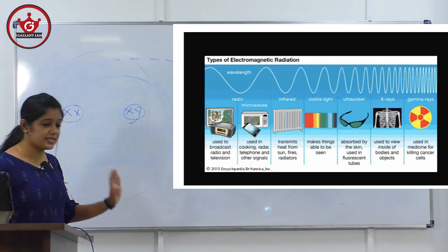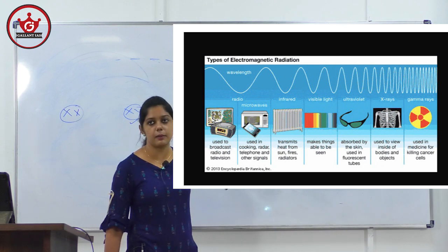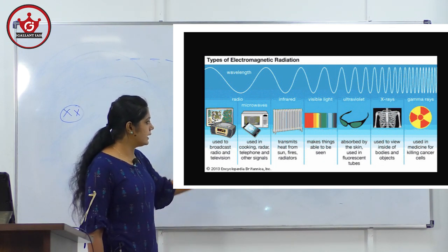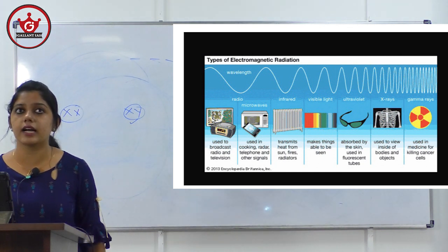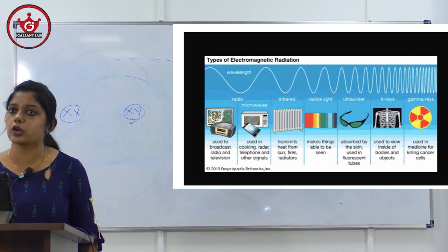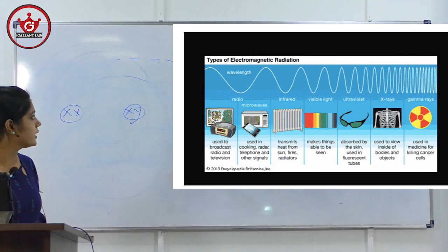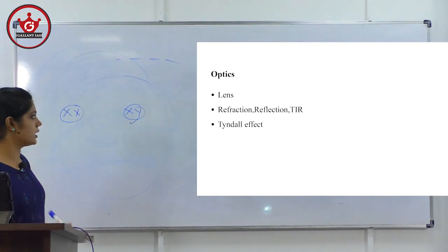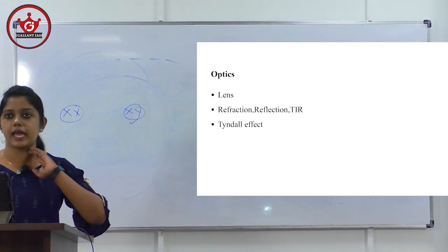Basic physics: the electromagnetic spectrum arranged by increasing frequency — radio, infrared, visible, ultraviolet, X-rays, gamma rays. Radio waves are used to broadcast radio and television; microwaves are used in cooking; infrared transmits heat from the sun, fire, radiation, etc. Last year a question was asked about the functioning of a pressure cooker. Similarly, functioning of a microwave oven or refrigerator — daily life application questions — can be expected. Optics-related questions can also be expected: convex lens, concave lens, refraction, reflection, total internal reflection, Tyndall effect.